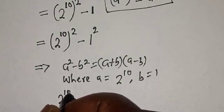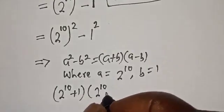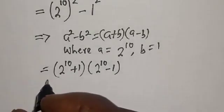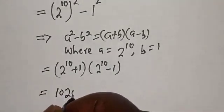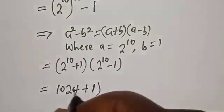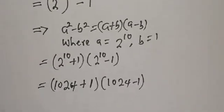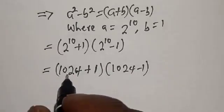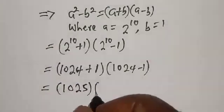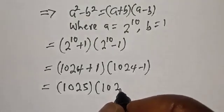2 raised to power 10 plus 1 multiplied by 2 raised to power 10 minus 1. 2 raised to power 10 is 1024 plus 1 multiplied by 1024 minus 1. 1024 plus 1 is 1025 multiplied by 1023.